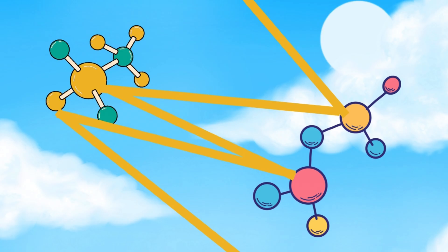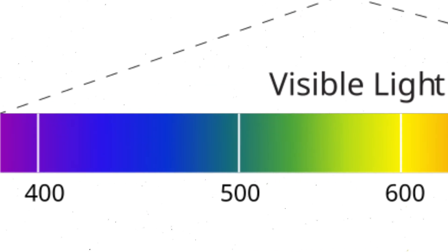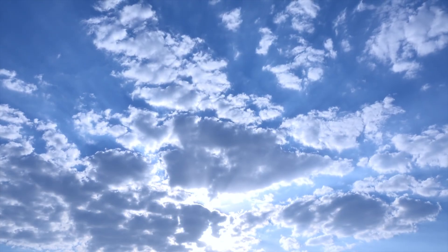If the wavelength of this light is shorter, it'll scatter more. Since blue is the shortest, it'll scatter the most. This is why the sky is blue.